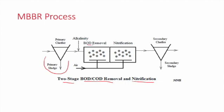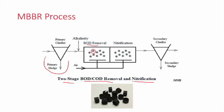The first tank is for BOD removal, and it contains MBBR media — small plastic media included inside the tank. The second tank is for nitrification. Air is injected through an air blower and diffused into both tanks. Then we have a secondary clarifier to settle down the sludge formed in this MBBR process.